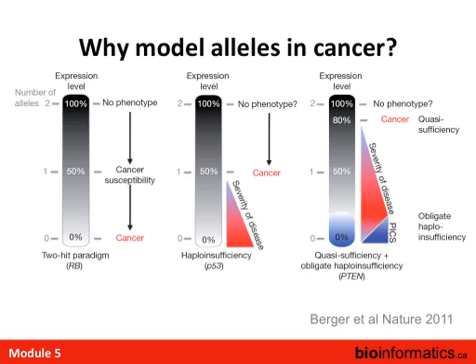Why should we model alleles in cancer? This review paper — with Knudson as second author — is a followup to his two-hit hypothesis 40 years later, refined considerably. There are three paradigms: in the classic two-hit paradigm, having both alleles gives no phenotype; losing one gives cancer susceptibility; losing two initiates tumorigenesis — as in retinoblastoma. In haploinsufficiency, losing one allele is already enough to initiate cancer; as expression is lost, disease severity increases — p53 is an example.